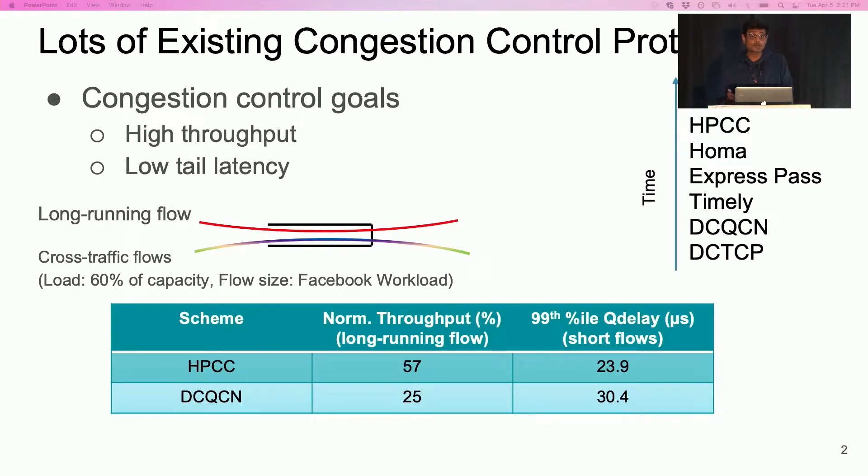This table shows the throughput of the long-running flow relative to the ideal value of 40 Gbps. The table also shows the queuing delay experienced by short cross-traffic flows at the tail.